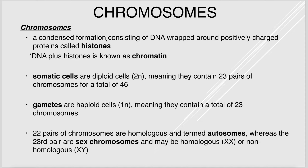The DNA plus histones is known as chromatin, present in non-dividing cells. You only see chromosomes when cells get ready to divide. We have two types of cells: somatic cells and gametes. Somatic cells are all cells except sperm and egg; they are diploid (2N), meaning they have 23 pairs of chromosomes — a total of 46.